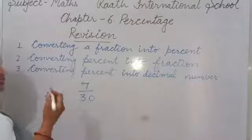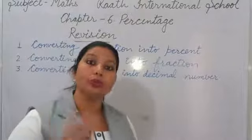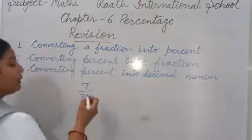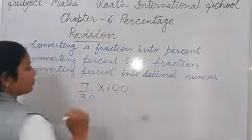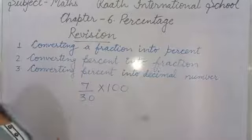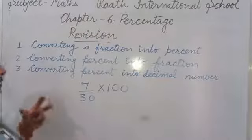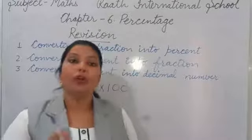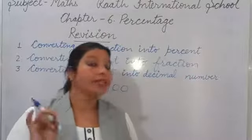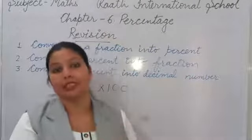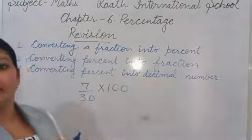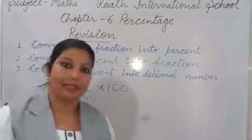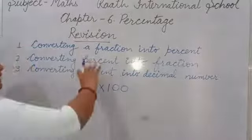The second method: whenever we want to change a fraction into percentage, we should multiply by 100. This is the main method of converting into percentage. Only when the question specifically says 'write the equivalent fraction and then find percentage' should you convert the denominator to 100.